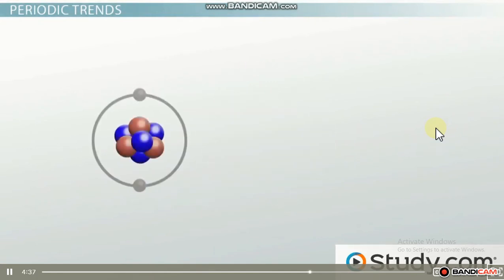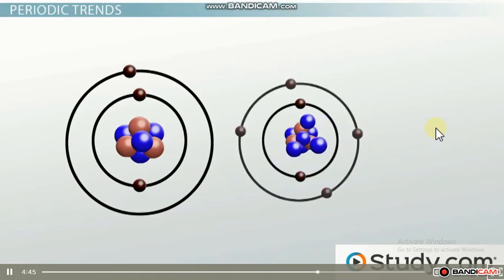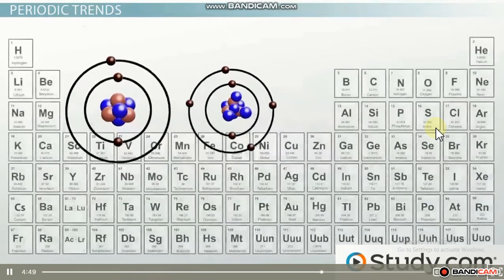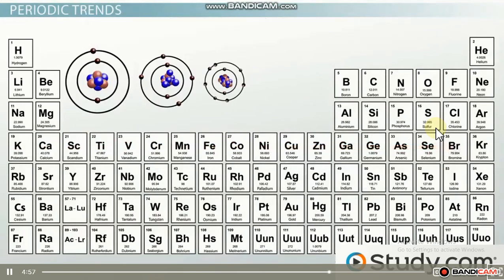So if atoms have the same number of energy levels, the atom with the more positive nucleus, the one with more protons in it, is going to be smaller than the atom with fewer protons. This means that as you move from left to right across the same period on the periodic table, the atomic radius will decrease due to the increase in the number of protons pulling in those valence electrons located in the same energy level.